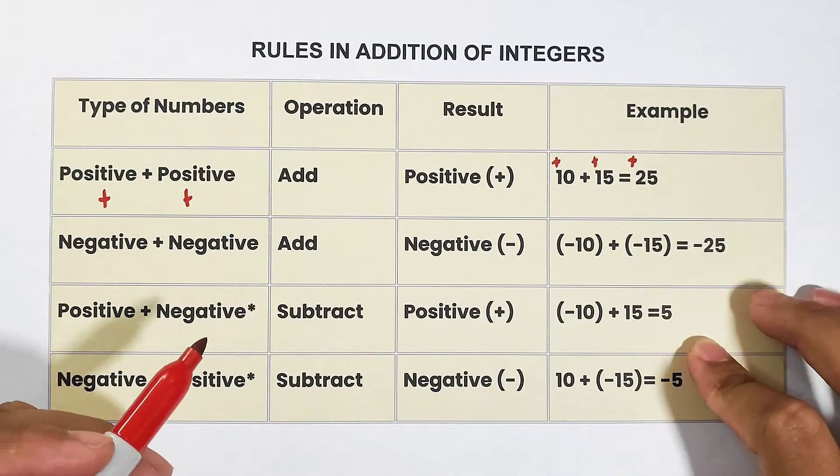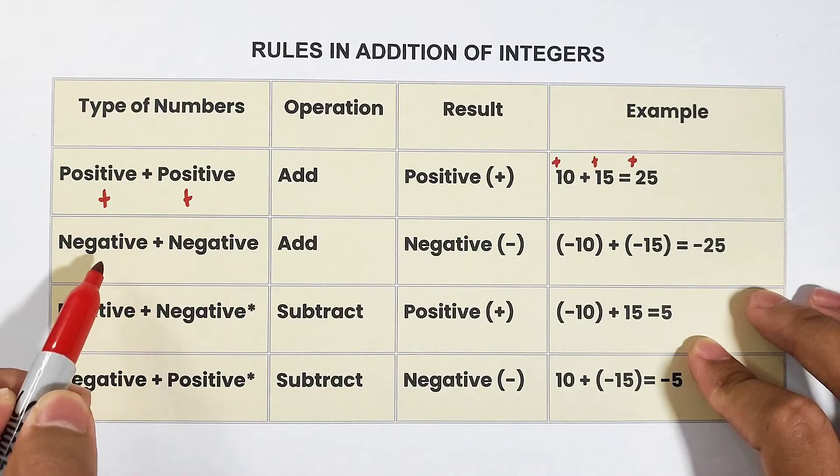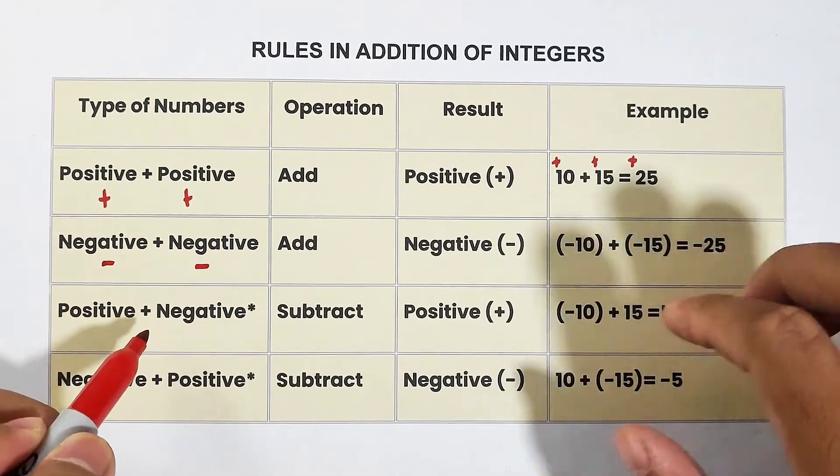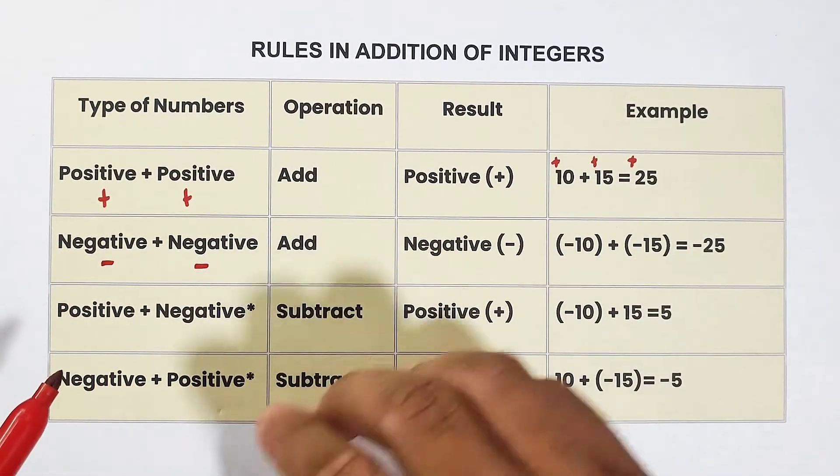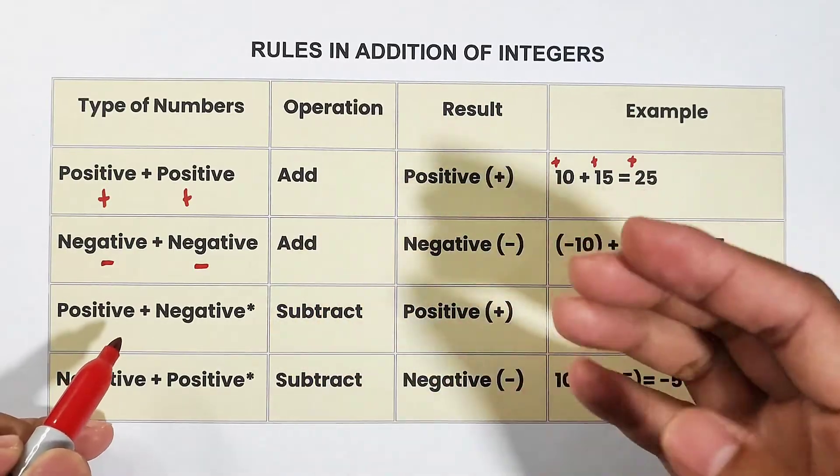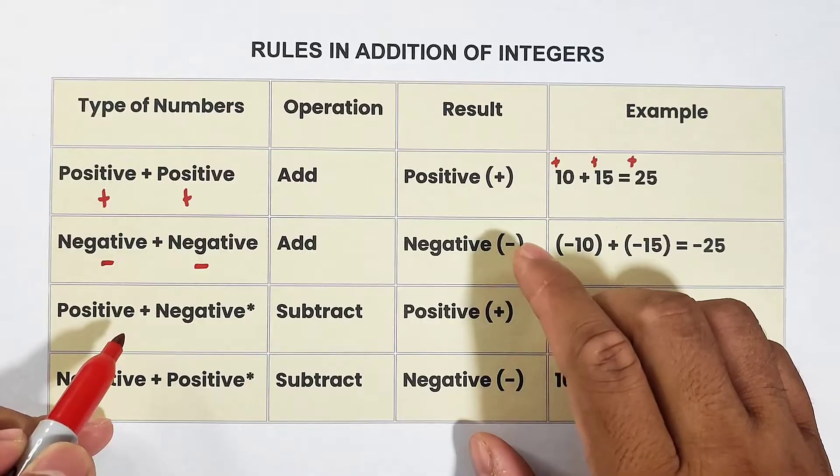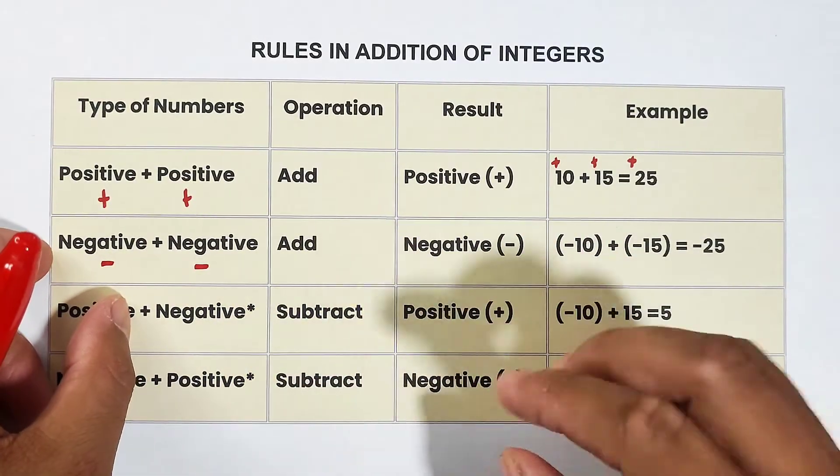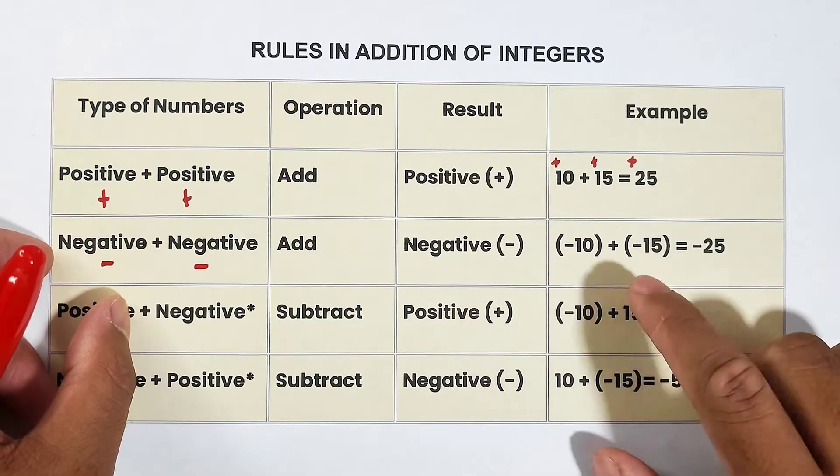And another thing that you need to remember here is when you add two negative integers. So what operation do we have there? We will add the integers. And of course, the result is basically negative because you added two negatives, therefore the sum is also negative.